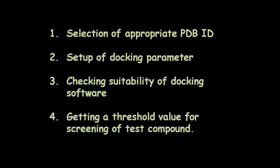The fourth important benefit is getting a threshold value for screening of test compounds. When we dock the natural inhibitor — the co-crystallographic ligand — within the binding pocket of the target protein, we get a docking score or binding energy of that co-crystallized ligand. This delta G value can be used as a threshold value. Test compounds which cross this threshold binding energy can be said to bind better with the target protein than its natural inhibitor.